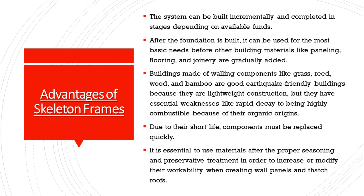The system can be built incrementally and completed in stages depending on available funds. After the foundation is built, it can be used for the most basic needs before other building materials like paneling, flooring, and joinery are gradually added. Buildings made of walling components like grass, reed, wood, and bamboo are good earthquake-friendly buildings because they are lightweight, but they have essential weaknesses like rapid decay and being highly combustible due to their organic origins. Due to their short life, components must be replaced quickly. It is essential to use materials after proper seasoning and preservative treatment in order to increase or modify their workability when creating wall panels and thatch roofs.